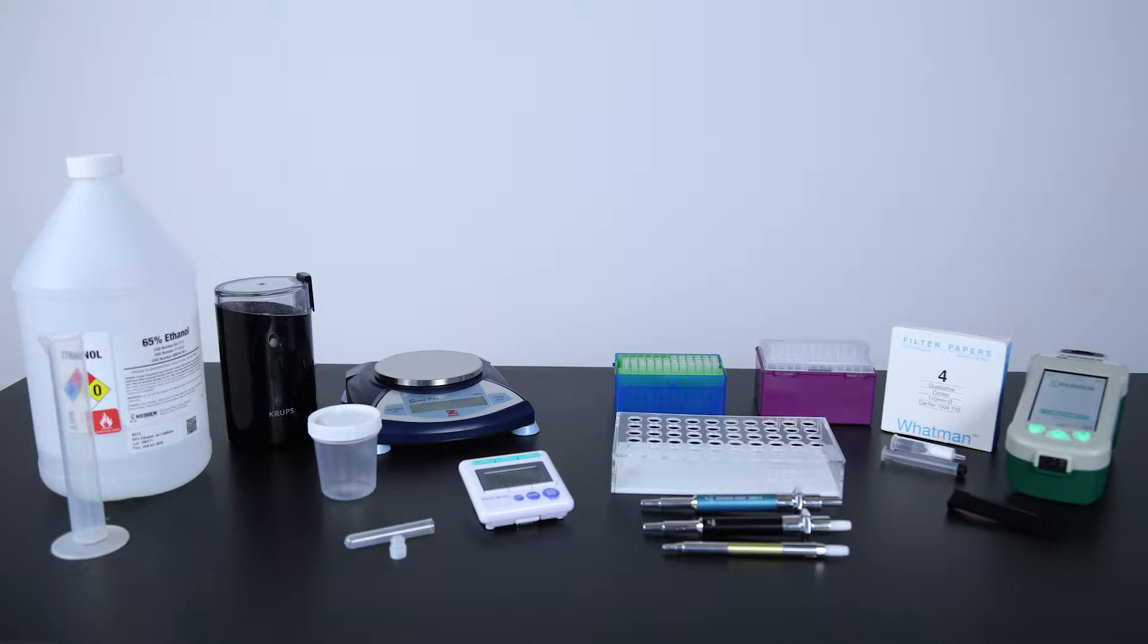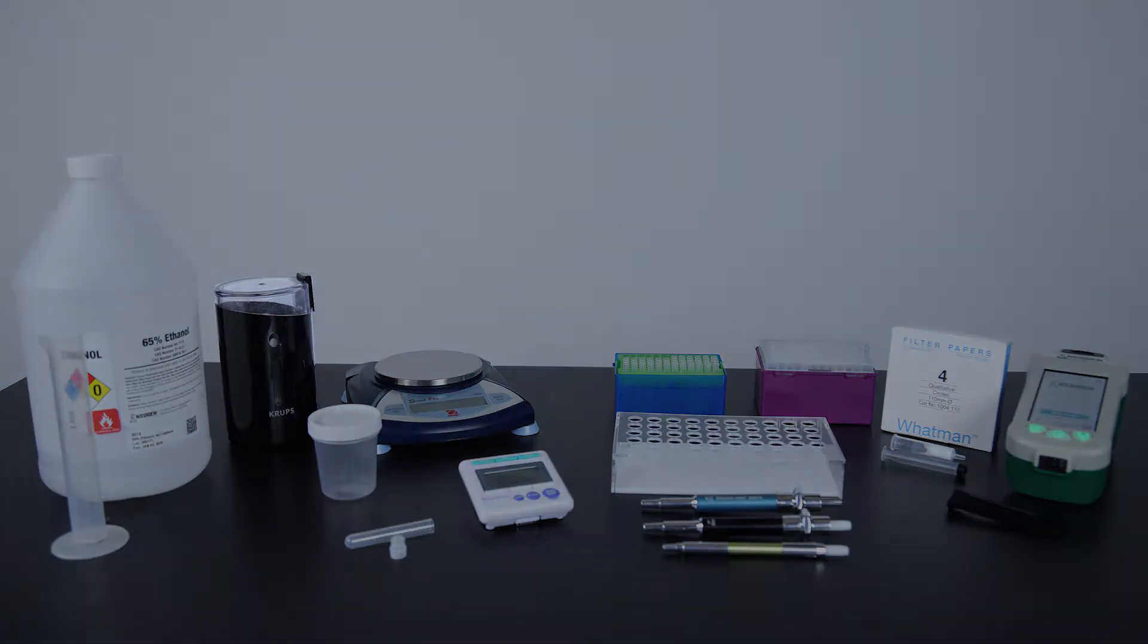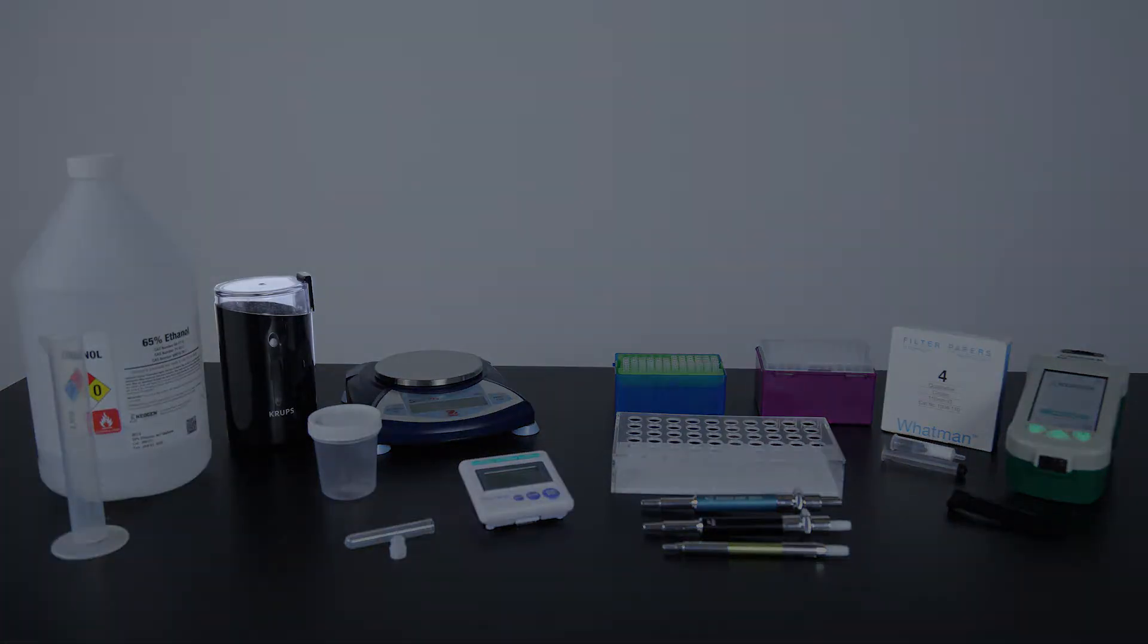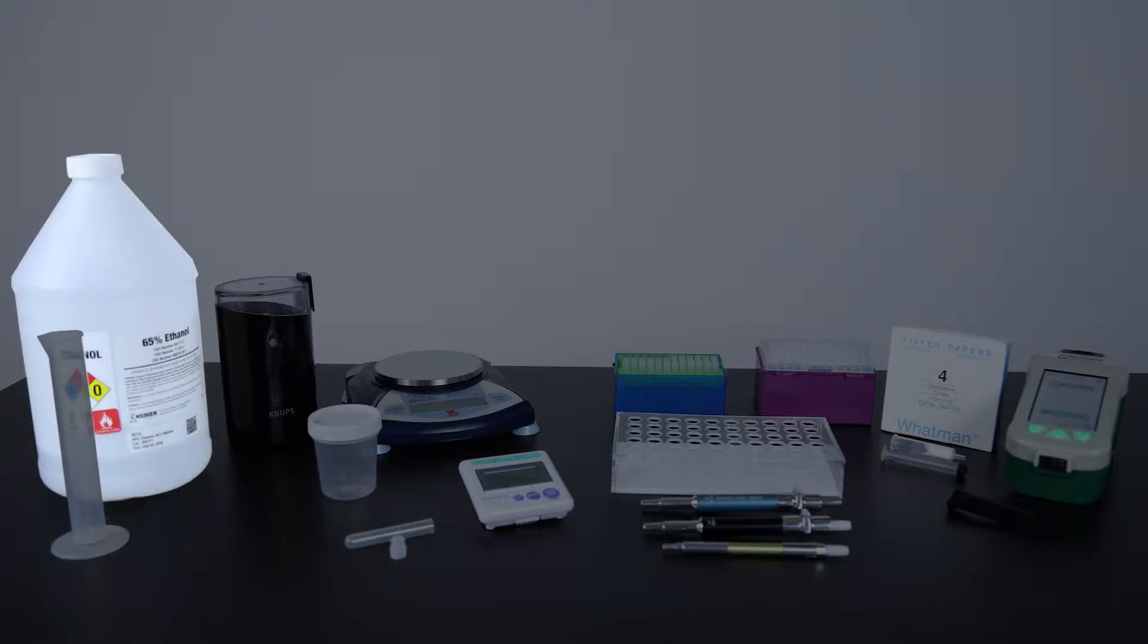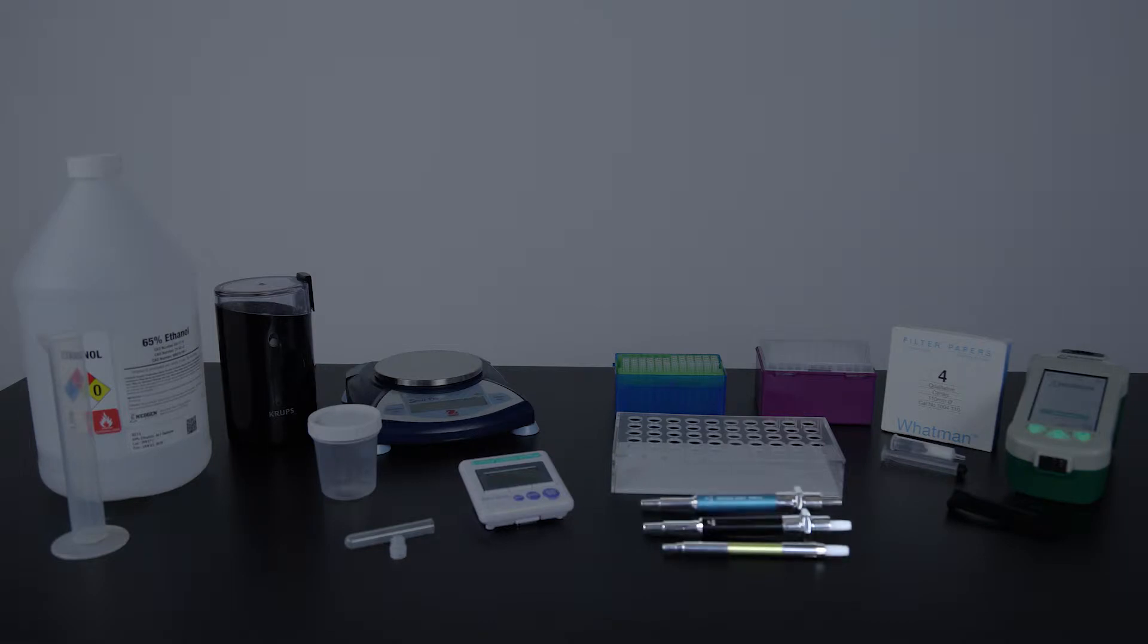To conduct the test, you will also need an Agri-Grind or equivalent grinder, a scale capable of weighing 10 grams accurate plus or minus 0.1 gram, a timer, a Reveal sample cup rack, 50 milliliter graduated cylinder, 65% ethanol solution, a 100 microliter, 400 microliter, and 500 microliter pipetter and tips.